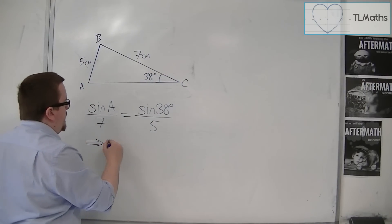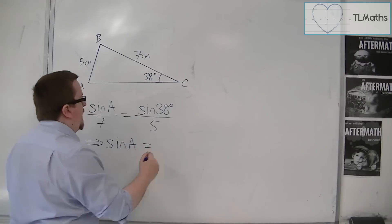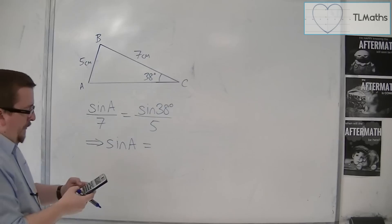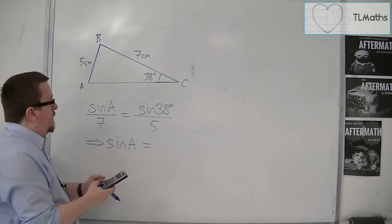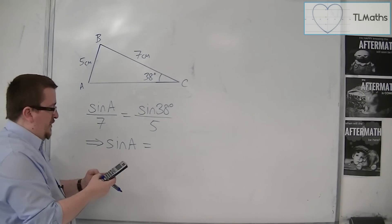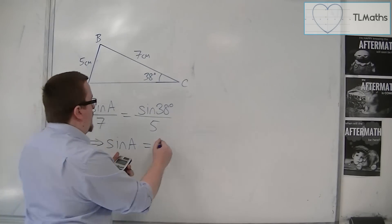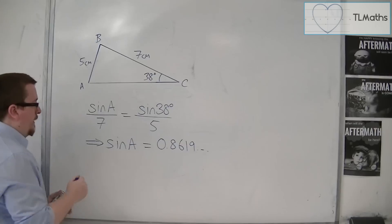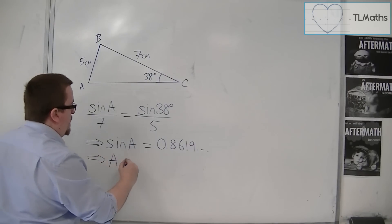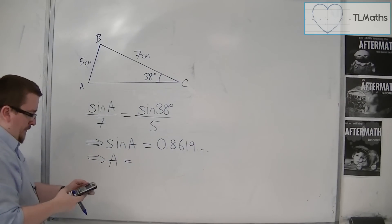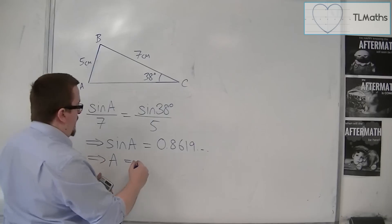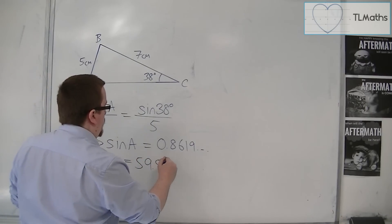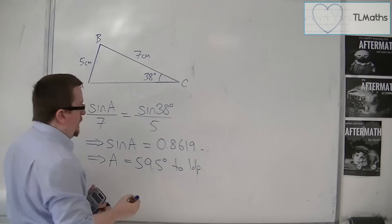And I'd be able to manipulate this to get sine A. So sine of 38 divided by 5 and then times by 7 gets me 0.8619, etc. And then I can inverse sine both sides. So inverse sine of this is 59.5 degrees to one decimal place.